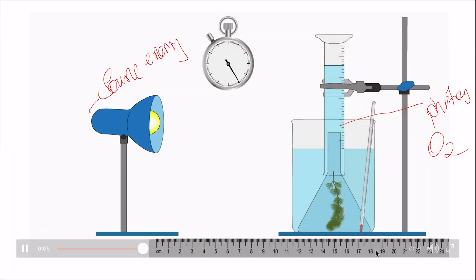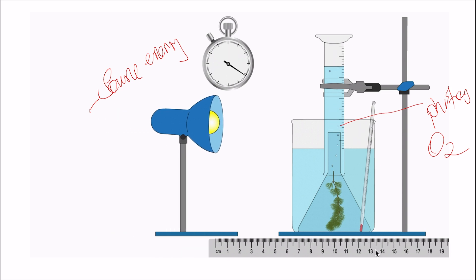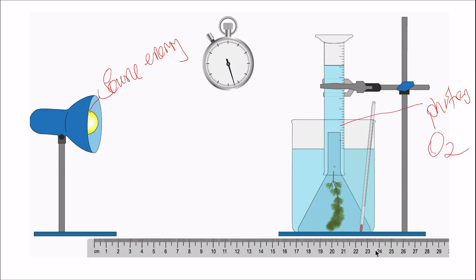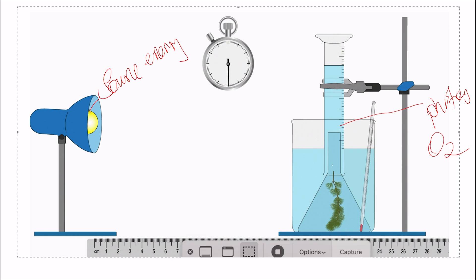The distance between the lamp and the setup represents light intensity, because as you decrease the distance between the lamp and the setup, that means there is an increase in light intensity — the lamp is moving closer to the setup. And as you increase the light intensity, you have increased production of bubbles, which indicates an increase in the rate of photosynthesis.